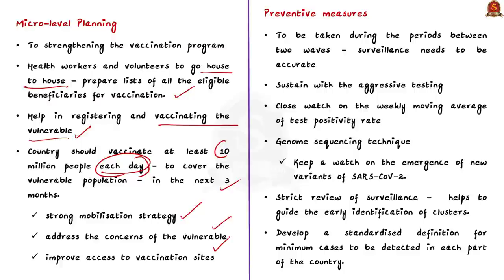In addition, the article highlights the preventive measures to be taken during the period between two waves. This is called the intervening period. The intervening periods between waves are very important. It is during these periods the surveillance needs to be accurate. So we have to follow aggressive testing, tracing and tracking measures even during this period. We also should keep a close watch on the weekly moving average of test positivity rate. This is really essential.